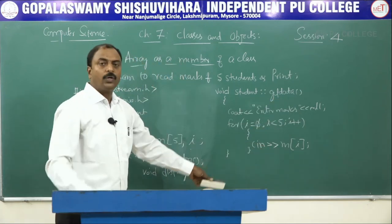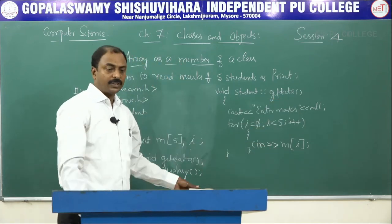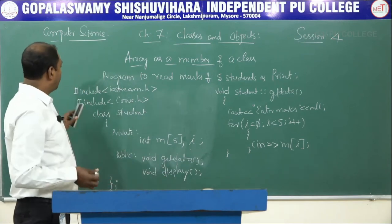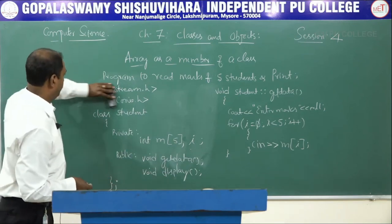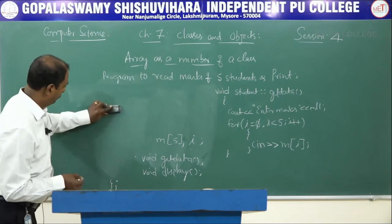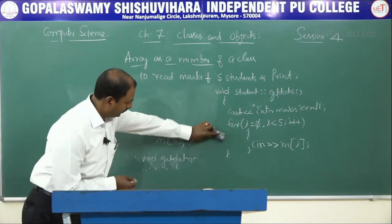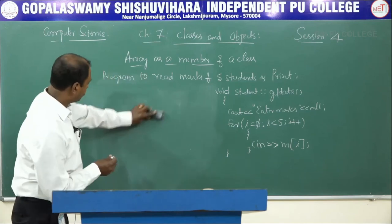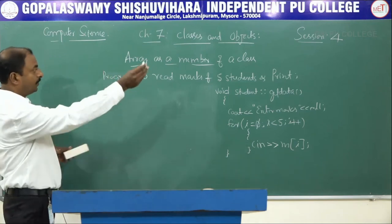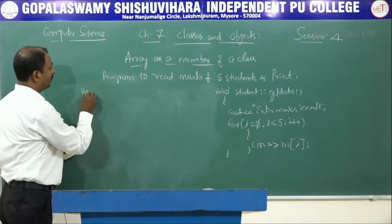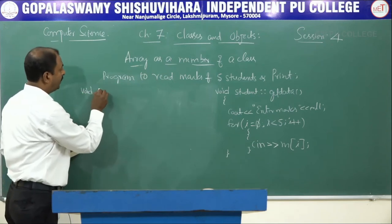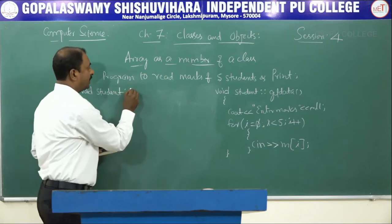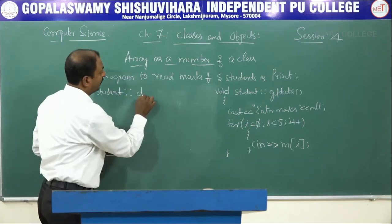Similarly, we define the void display function. The class name is 'student' with the scope resolution operator, and the function name is 'display'. Inside, we write the output statements to print the marks.